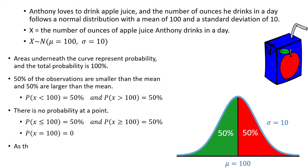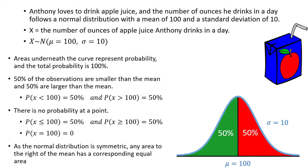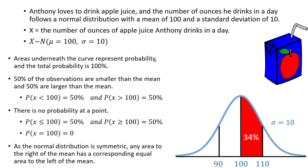Also, as the normal distribution is symmetric, any area to the right of the mean has a corresponding equal area to the left of the mean. For example, the area between 100 and 110 will be the same as the area between 90 and 100, since both 90 and 110 are 10 units away from the mean, just in opposite directions. The probability happens to be about 34% in both cases, which you might know if you are familiar with the empirical rule. Let's look at how we can calculate probabilities like this now.